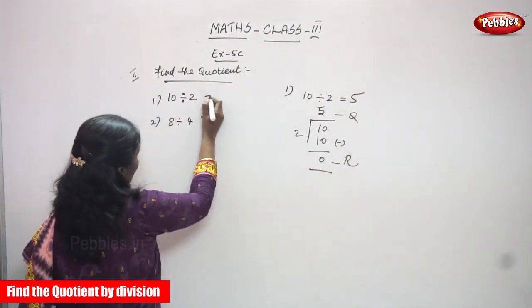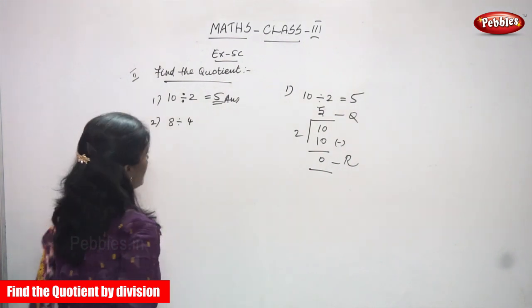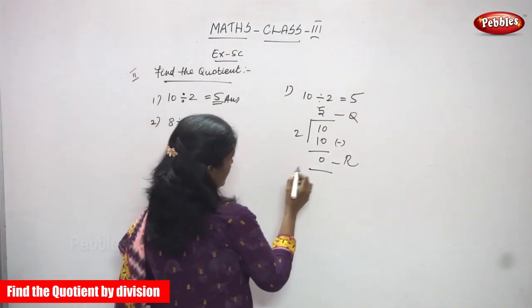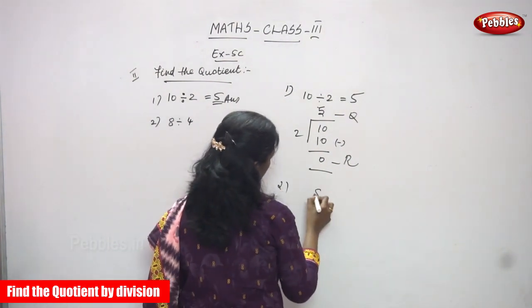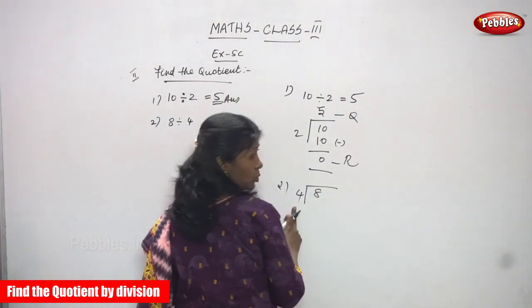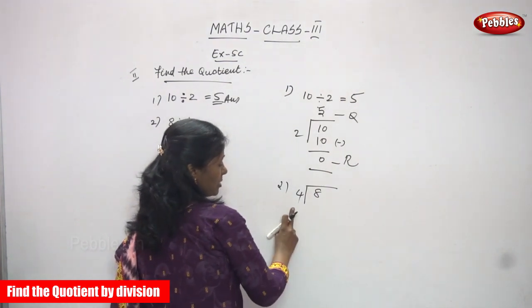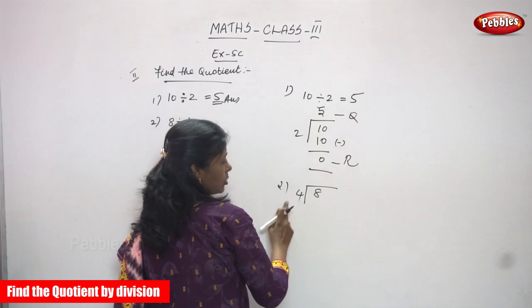5 is the right answer for the question. The second sum is 8 divided by 4. It's the dividend and the divisor, so you must use the 4 times table. 8 is the dividend and 4 is the divisor.